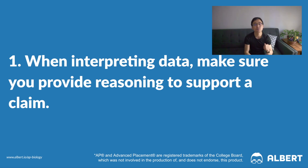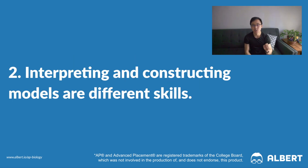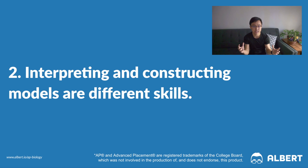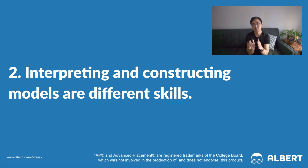The next tip is to make sure that you understand that interpreting and constructing models are two different skills. It's not enough, for example, to just create a phylogenetic tree. The student needs to actually understand what that model they've made actually says about the problem. Tip number three is to make sure that you are practicing applying fundamental knowledge of basic biology to giving an explanation for why you chose to present data in a certain way.